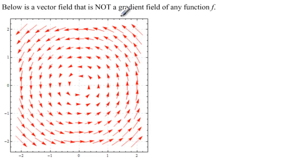Now, let's keep in mind that although all gradient fields are vector fields, not all vector fields are gradient fields of a function. And this is an example here of a vector field that is not a gradient field of a function.